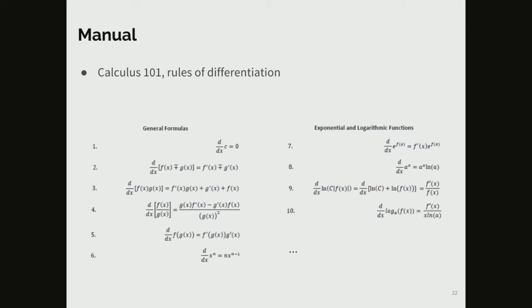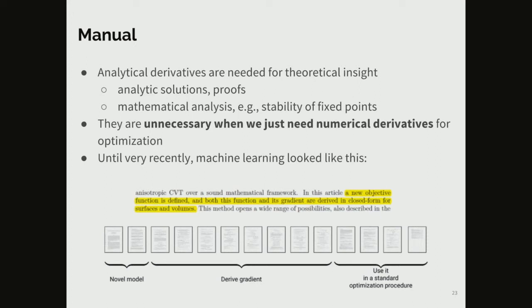I'm going to cover three cases: manual or symbolic differentiation, numerical differentiation, and automatic differentiation. The manual one is the one you know from your calculus course — you have rules of differentiation such as the addition rule and multiplication rule. It's a rule-based, mechanistic procedure. Interestingly, when Leibniz introduced calculus he wrote that one day this could be done by a machine, a reference to it being a mechanistic procedure.